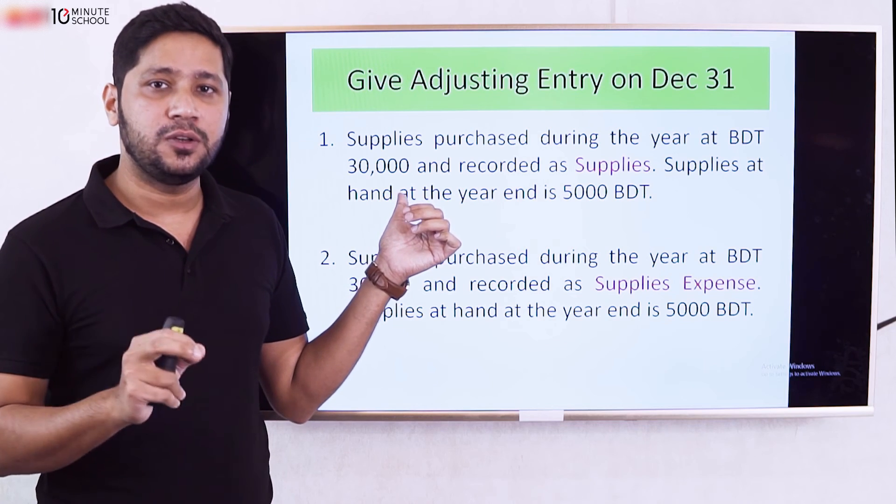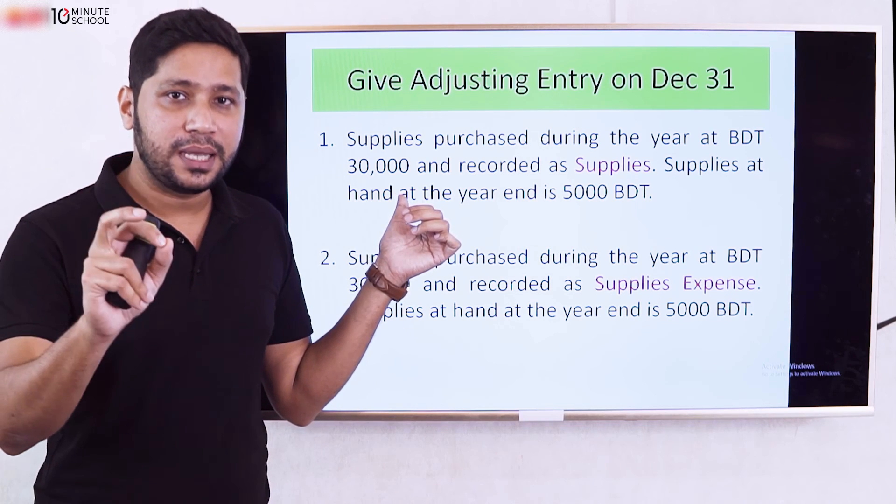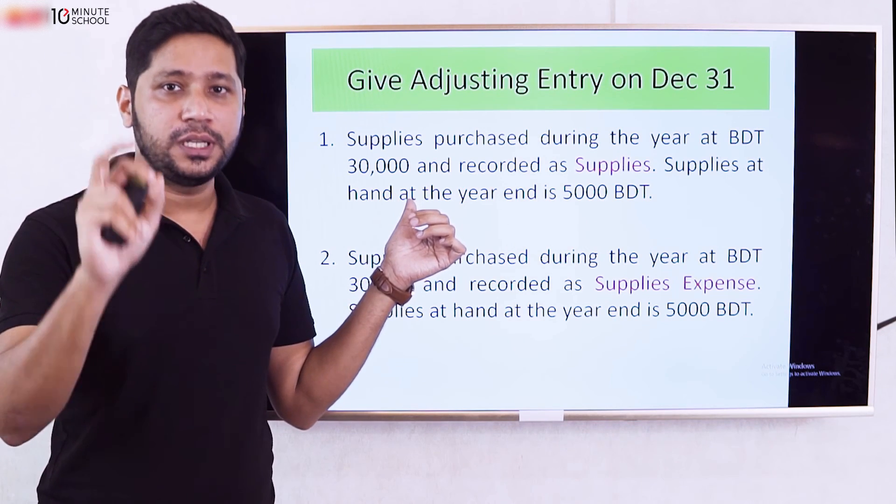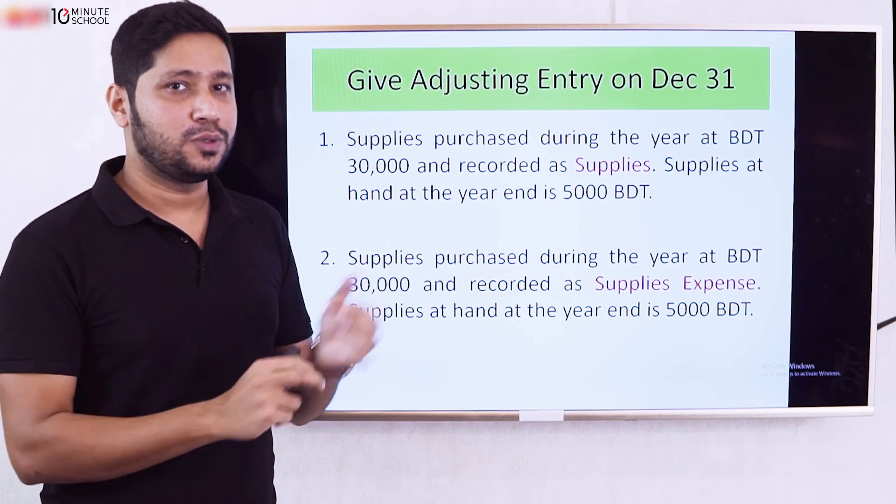So the adjusting entry amount in the journal is: Supplies Expense debit $25,000, Supplies credit $25,000.